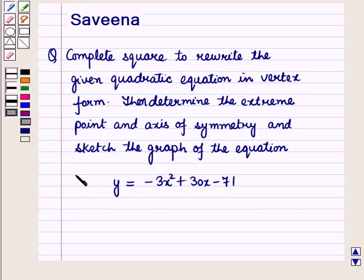Hello and welcome to the session. In this session we will discuss a question which says: complete the square to rewrite the given quadratic equation in vertex form, then determine the extreme point and axis of symmetry, and sketch the graph of the equation y is equal to minus 3x squared plus 30x minus 71.